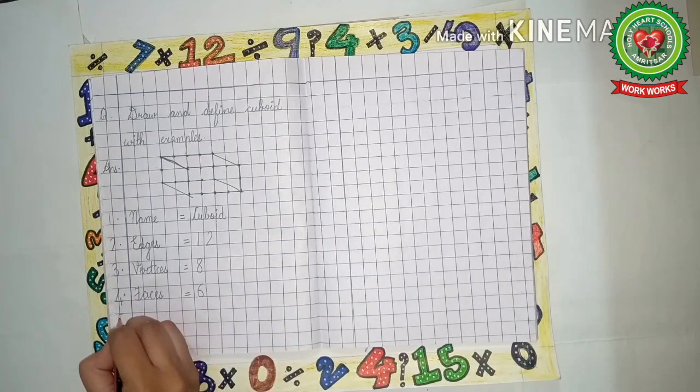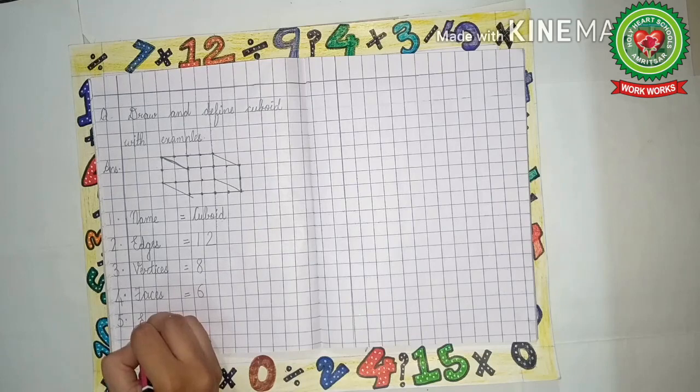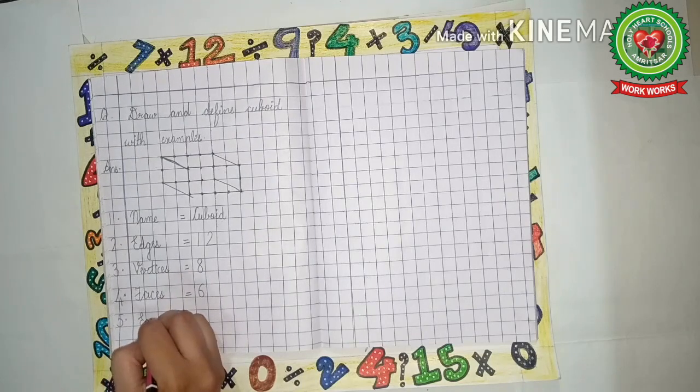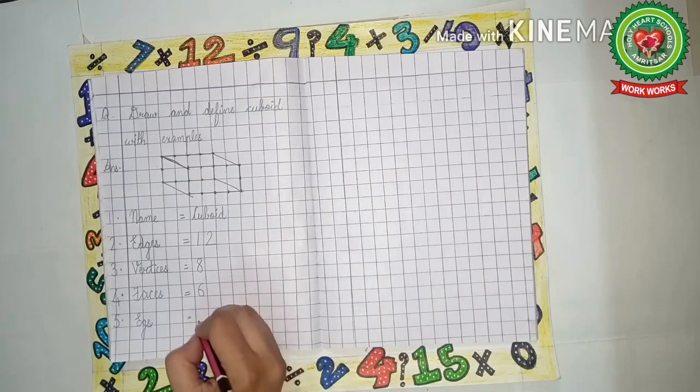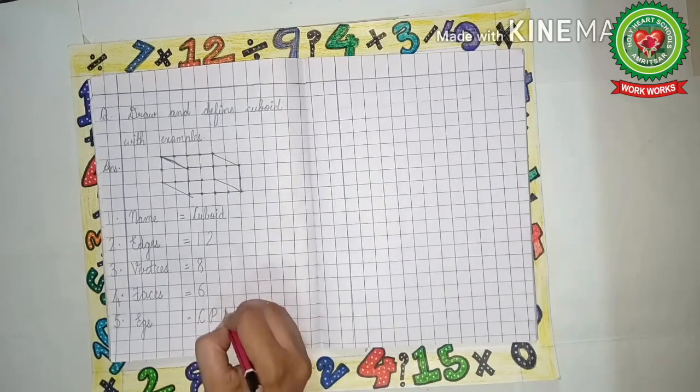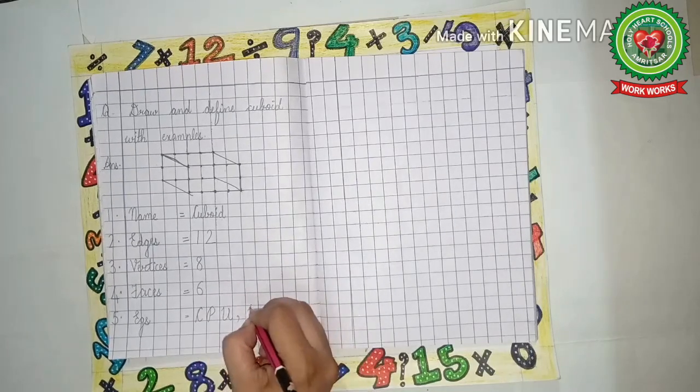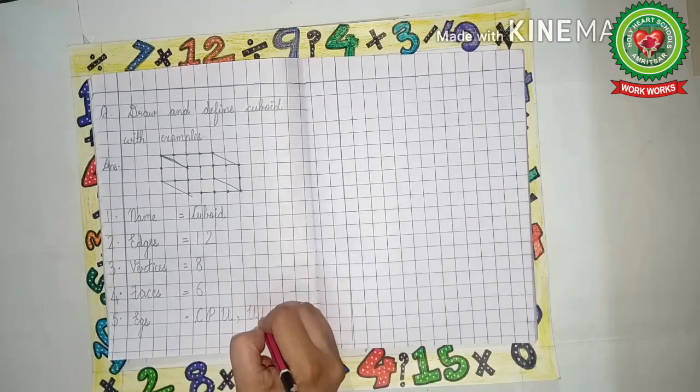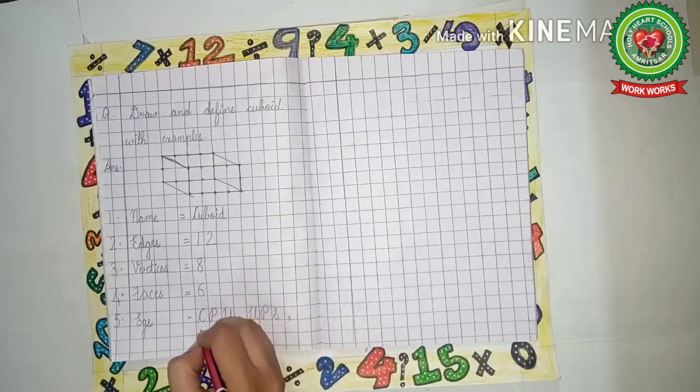Five dot: Examples. Now what are the examples of cuboid? It's CPU—C-P-U, UPS, comma, LCD, and brick—B-R-I-C-K, etc.